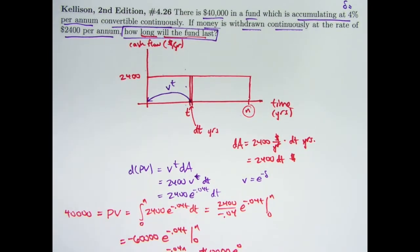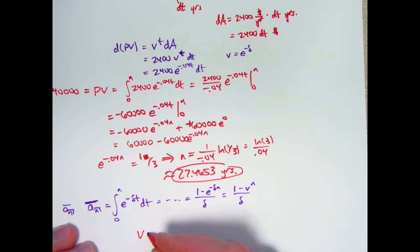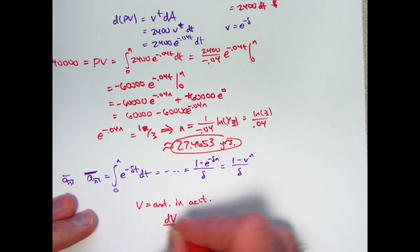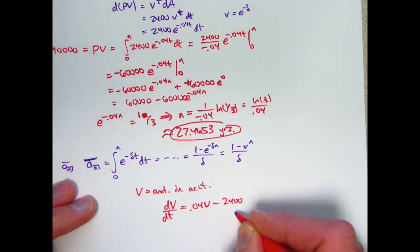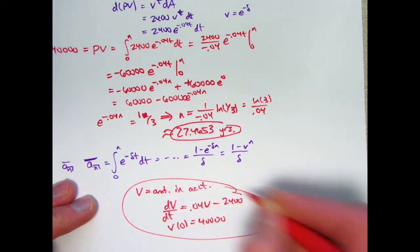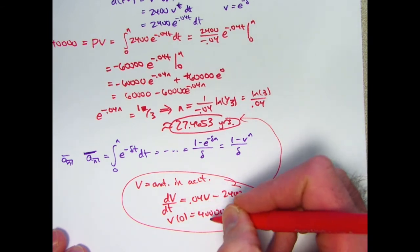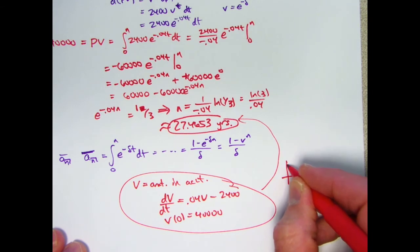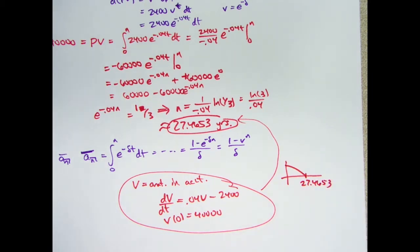And let me also remark that this problem can be solved another way. It can be solved with differential equations as well. If v is the amount of money in the account, the assumptions of the problem say that v satisfies the differential equation dv/dt equals 0.04v minus 2400. 0.04 being the force of interest, 2400 being the rate at which money is being taken out in dollars per year, and the initial condition is v of 0 is 40000. I would encourage you if you know about differential equations and in particular separating variables to help you solve this differential equation, confirm that you get the same answer. That the solution of this initial value problem will cross zero when t is about 27.4653. Again, if you know about differential equations and separation of variables, I would encourage you to solve it that way.